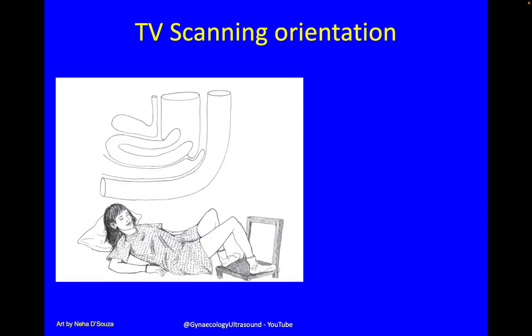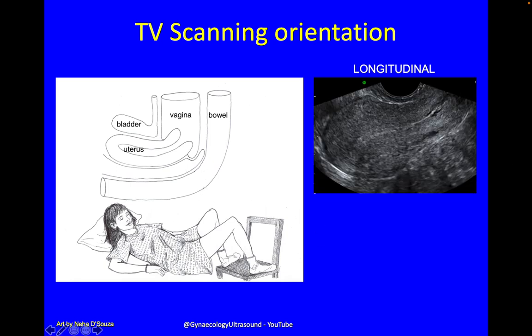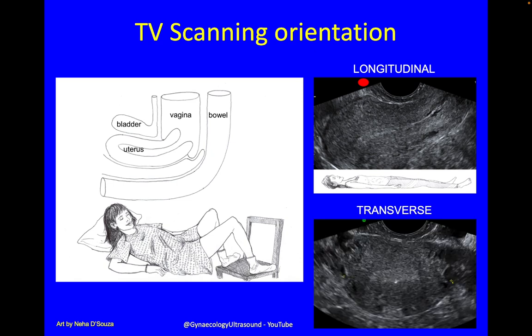So ultimately, if somebody has an anteverted uterus, this is what it would look like: bladder at the front, then the uterus, the vagina and the bowel, and the pouch of Douglas in between. The uterus would look like this with the anterior wall, fundus, posterior wall, and here's the cervix — the patient's head end and foot end. In a transverse view you'd have the patient's right on that side and the left on that side. I always scan this way, nice and simple.